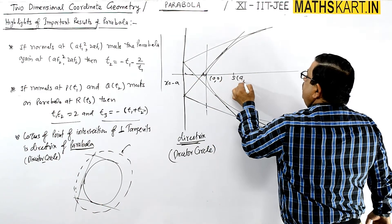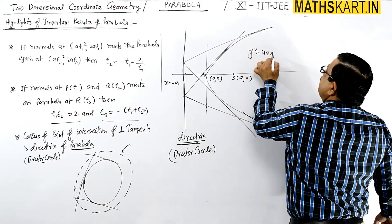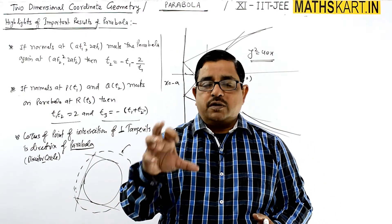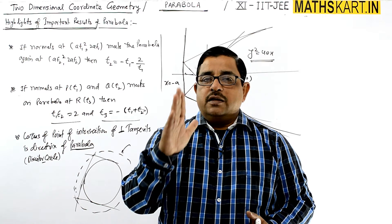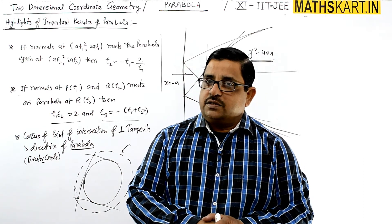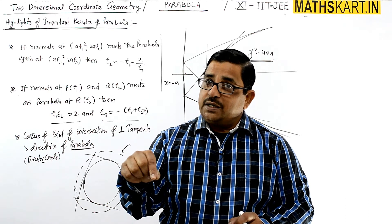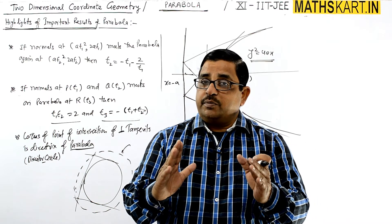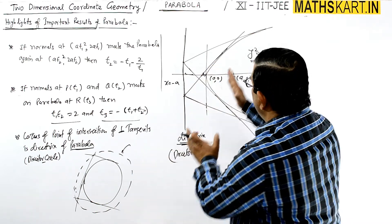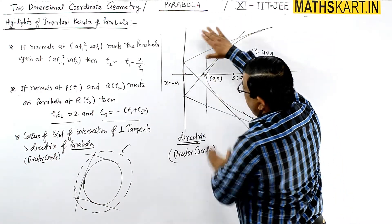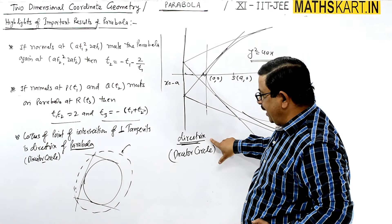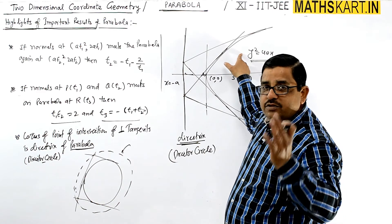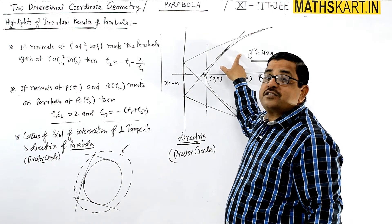For the parabola y² = 4ax, the focus is at (a, 0). Following the same definition as the director circle — locus of point of intersection of perpendicular tangents — we get a straight line rather than a circle. So all perpendicular tangents meet at the straight line x = −a, and that is why it is known as the directrix, not the director circle.